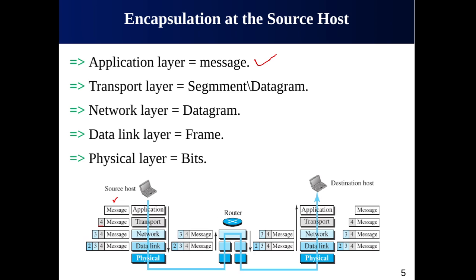Besides adding process identifiers, the transport layer header also contains extra information needed for end-to-end delivery, such as flow control, error control, and congestion control. This process is known as encapsulation. The resulting transport layer packet is known as a segment or datagram, depending on the protocol being used, and it contains the actual message plus the additional header information.